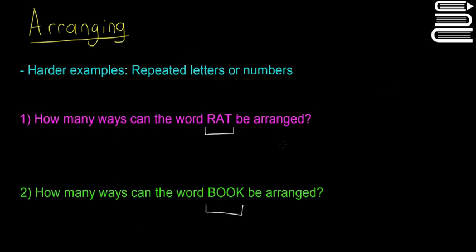So we'll do RAT first just as an easy example. Since there are three letters, none of them are repeated. If you want to get how many different ways it can be arranged, it's just three factorial, which is 3×2×1. And that'll give us six as an answer.